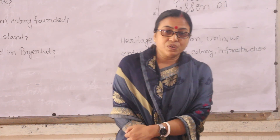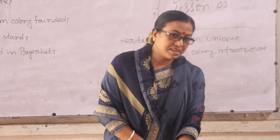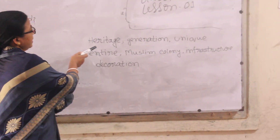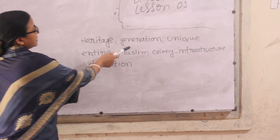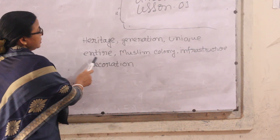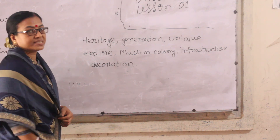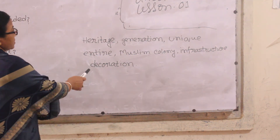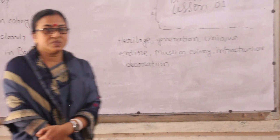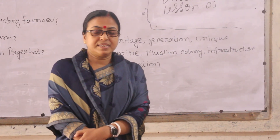Learners, now your homework. Here are some clues for you: heritage, generation, unique, entire, Muslim colony, infrastructure, decoration. By using these clues, you will make a paragraph. It's your homework.